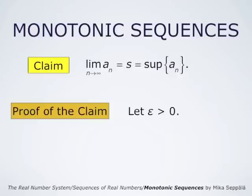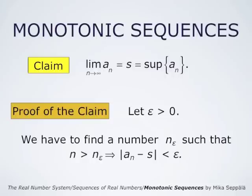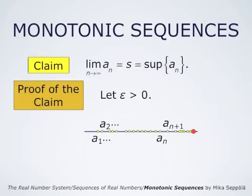To prove this claim by the definition of limits, we start by choosing an arbitrary positive number epsilon. We have to find a number N_epsilon such that whenever N is larger than N_epsilon, the numbers AN are closer than distance epsilon to the limit S. So if we can find N_epsilon such that whenever N is larger than N_epsilon, the absolute value of AN minus S is less than epsilon, we are done. Graphically, this means we have chosen epsilon, and the numbers AN on the number line all lie on the left-hand side of their supremum S, the red dot. We must find N_epsilon so that whenever N is larger than N_epsilon, the numbers AN lie at most at distance epsilon from the red dot — that is, on the green line segment of length epsilon.